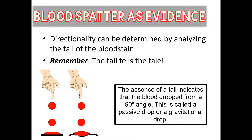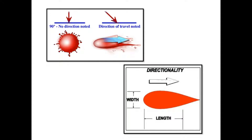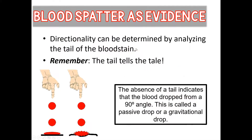Directionality can be determined by analyzing the tail of the blood stain, or lack thereof. On the left we have a circular-shaped blood stain, whereas on the right we have a more elongated blood stain with a tail off the end. Investigators use that tail to determine directionality — the tail tells the tale. If they can determine where the blood was traveling, they can work backwards and determine where it came from.